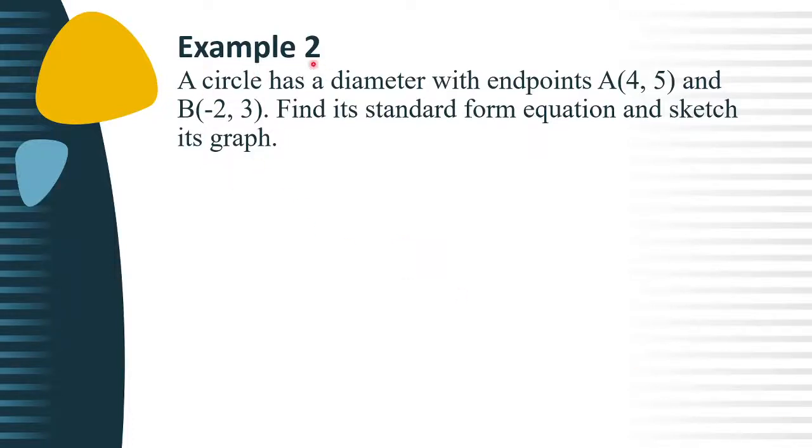So let's have example number 2. A circle has a diameter with endpoints A(4, 5) and B(-2, 3). Find its standard form equation and sketch its graph.